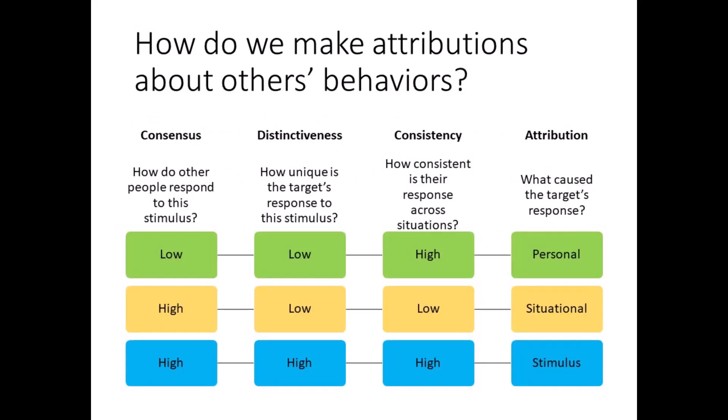Now let's explore each of the three factors. First, consensus is whether the target's behavior is in line with how most other people respond to the stimulus. Low consensus means the target's behavior deviates from the social norm. High consensus means most people would behave the same way the target behaved. Second, distinctiveness is how unique the target's response is to the stimulus. Low distinctiveness means the target's behavior is typical for them when facing the stimulus. High distinctiveness means the behavior is unique and likely tied to the stimulus, not the person or the situation.